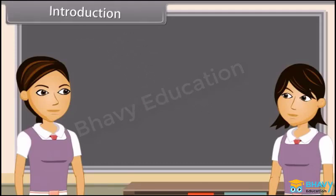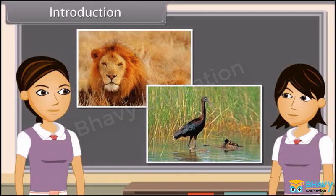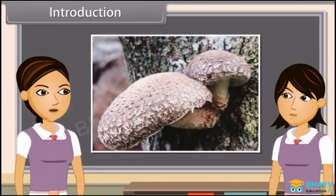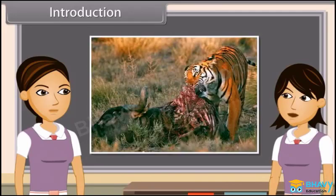We know that animals are heterotrophic and hence they depend on other organisms for their food. Animals need an external source of food. So we can also say that they depend upon ready-made food, and this may come either from plants or from other animals.